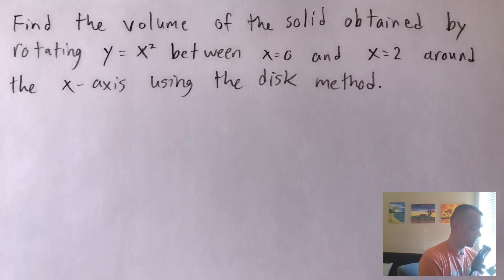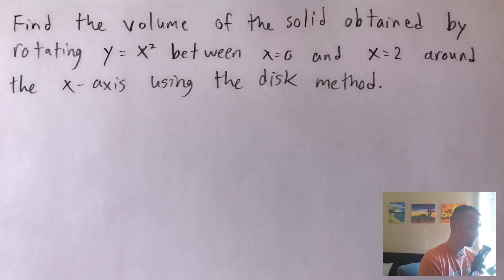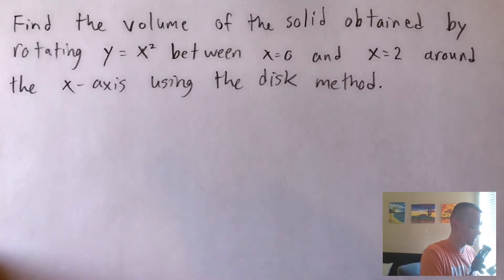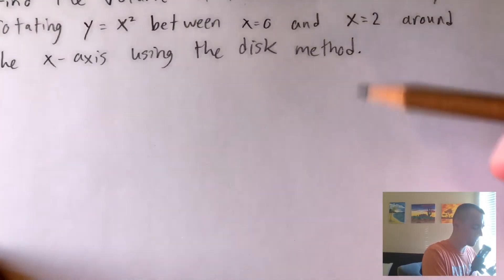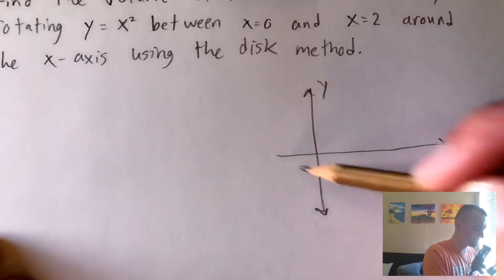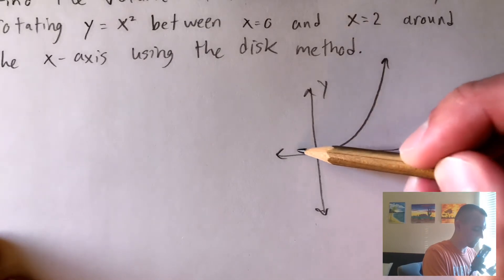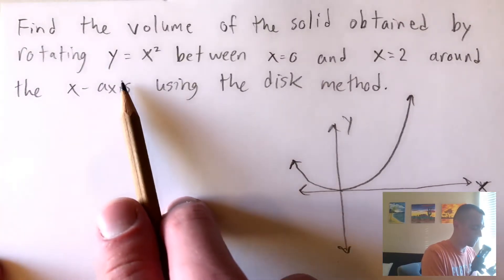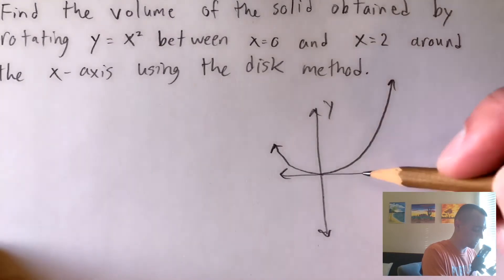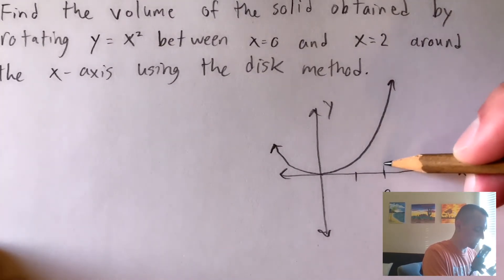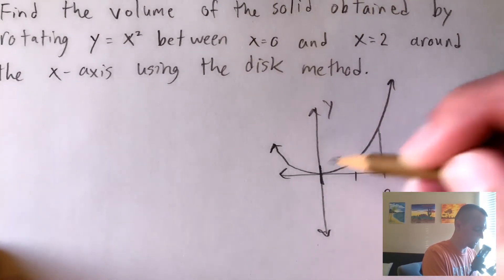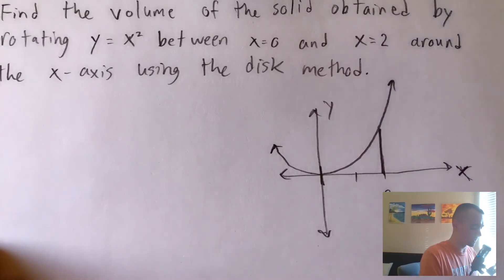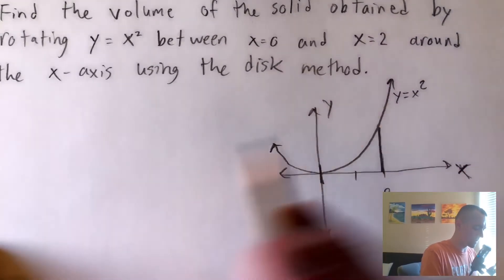Let's go ahead and jump into this problem. Usually with these problems where we're taking some function, rotating it around some axis and finding the volume of the solid, the best place to start is by drawing a sketch. So let's start by graphing y equals x squared — it looks like a parabola with the vertex at the origin. We want to take this function just between x equals 0 and x equals 2, so we're looking at this portion of y equals x squared.